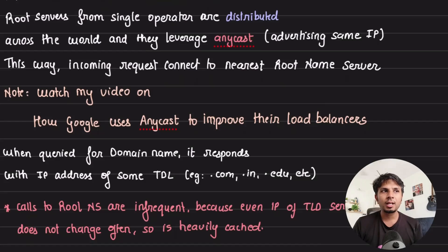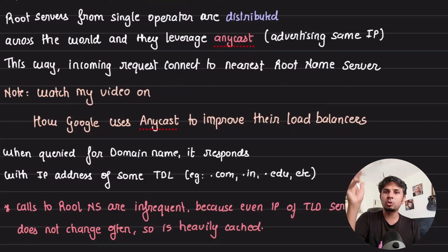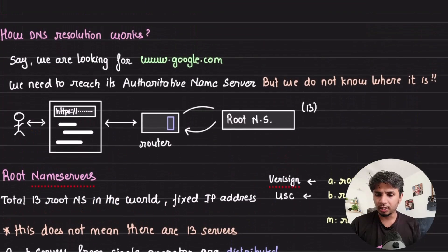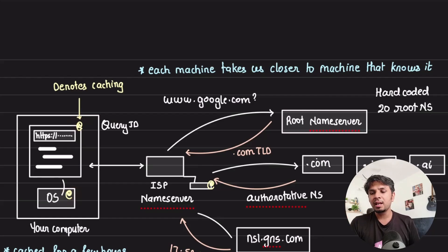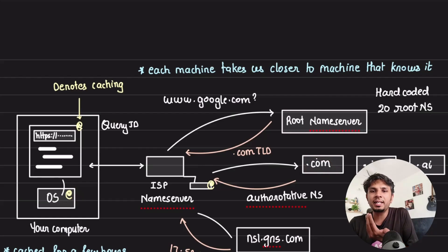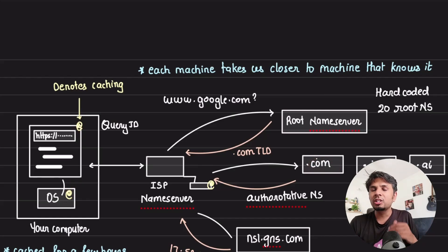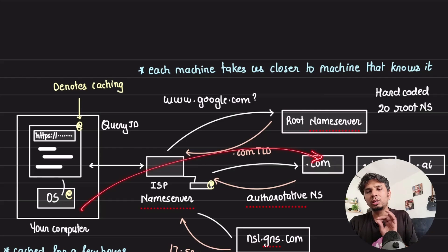Root name servers are aware of TLD name servers so they can respond with their IP addresses. You might ask: does every single website request go to the root name servers? Not really — your browser and OS cache a lot. TLD server IP addresses can also be cached because they rarely change. So there's heavy caching at every layer, meaning requests can go directly to the .com TLD server or straight to the authoritative name server.